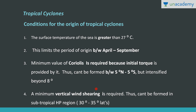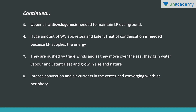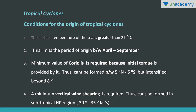A minimum vertical wind shearing is required for tropical cyclones, which is why they cannot form in the subtropical high pressure region, that is 30 to 35 degree latitudes, where the descending wind system is present. The next condition required is upper air anti-cyclogenesis condition, needed to maintain low pressure over the ground. Additionally, there has to be a huge amount of water vapor above the sea plus latent heat of condensation, as it is the latent heat of condensation that supplies energy to the cyclone. These cyclones are pushed by trade winds and as they move over the sea they gain water vapor and latent heat, growing in size and becoming mature. Intense convection and air currents in the center and converging winds at the periphery are also required.